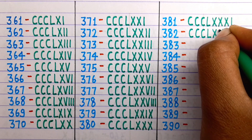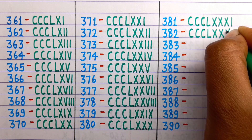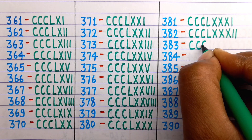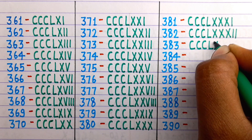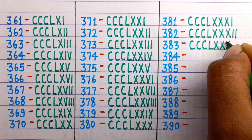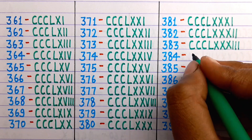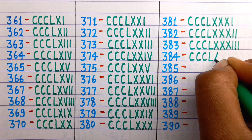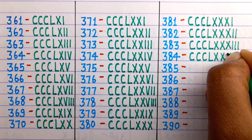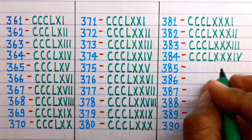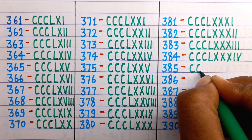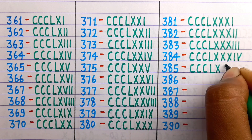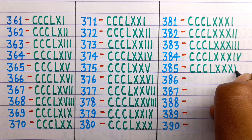382 is CCCLXXXII. 383 is CCCLXXXIII. 384 is CCCLXXXIV. 385 is CCCLXXXV.